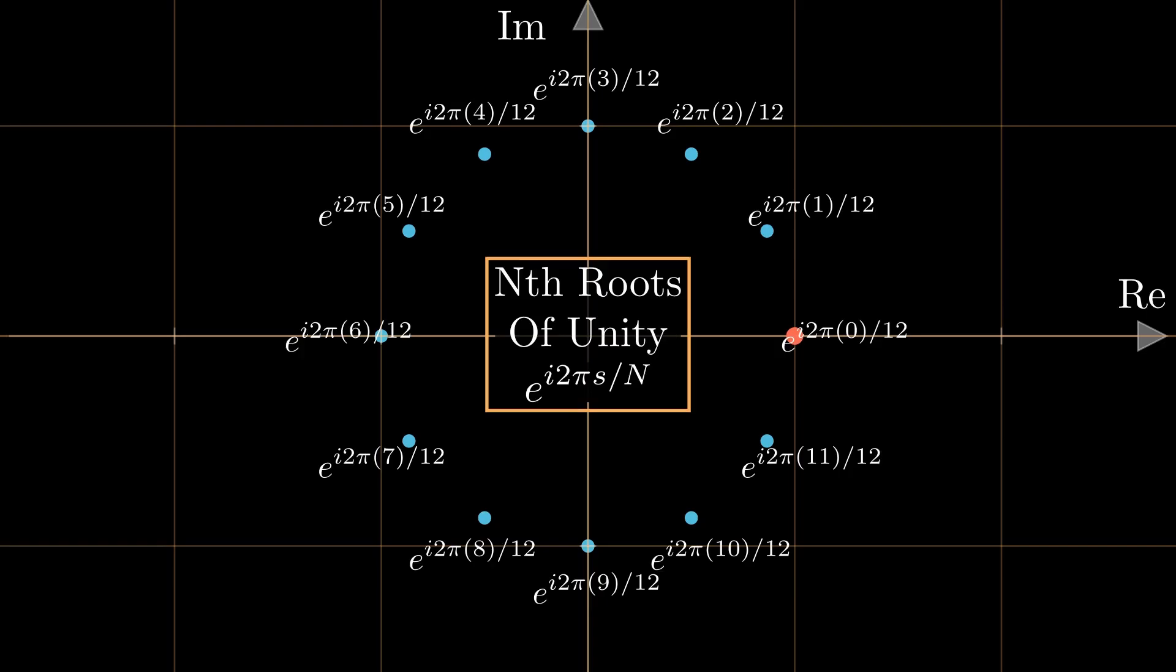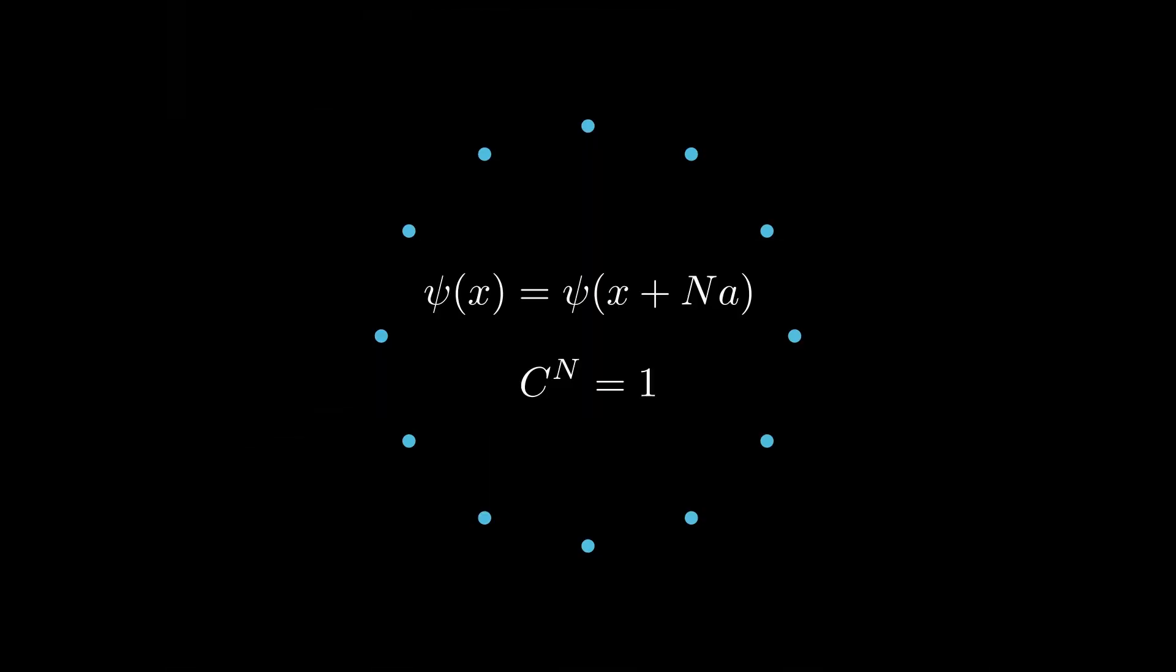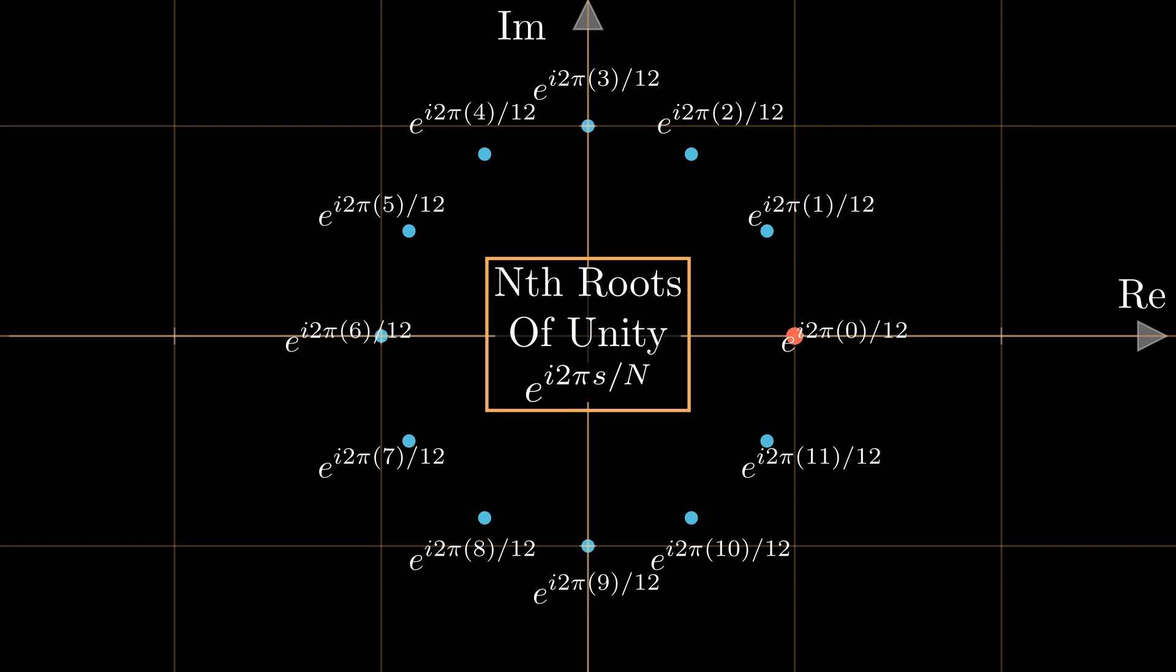And believe it or not, we've actually just figured out what our solution is. These nth roots of unity fit our requirements for our constant c. They have magnitude 1, and you can check for yourself to see that raising them to the power n will always yield 1.